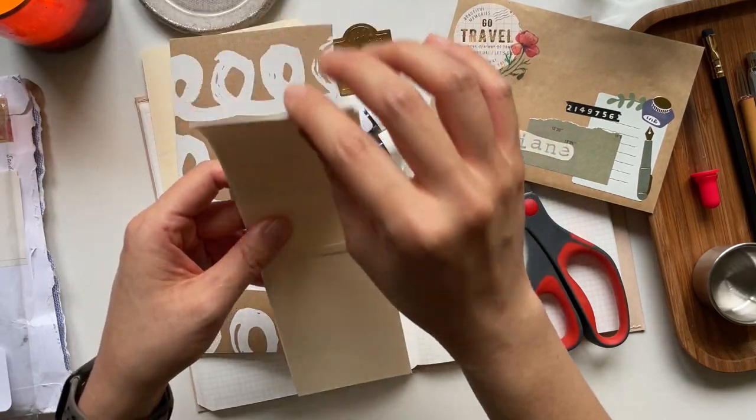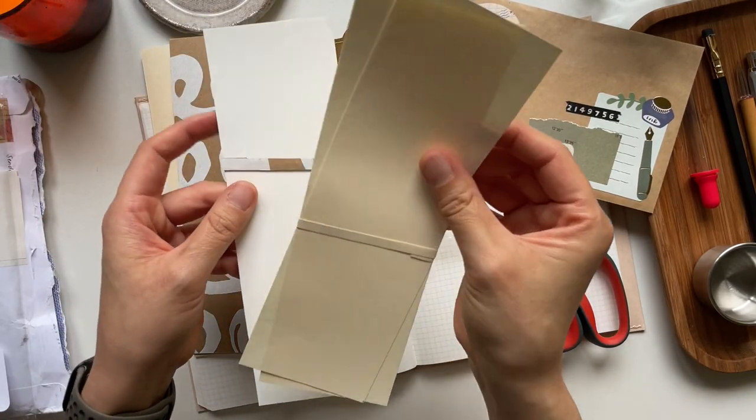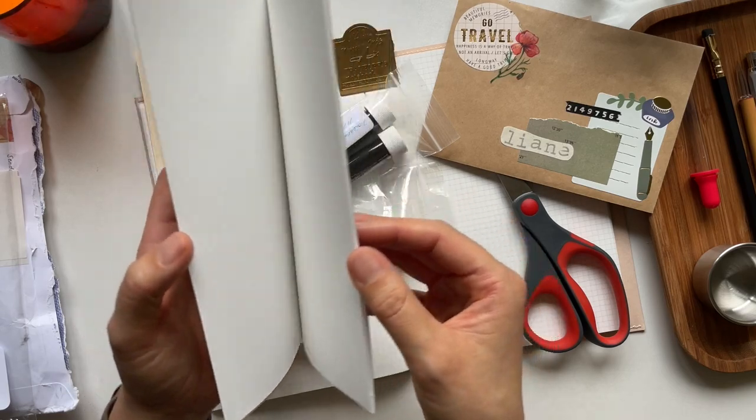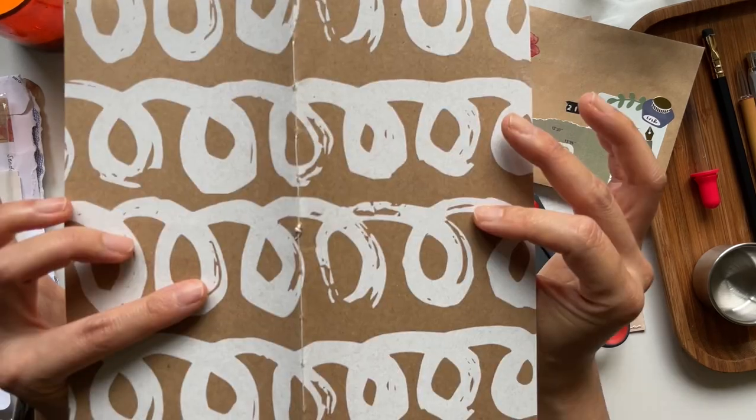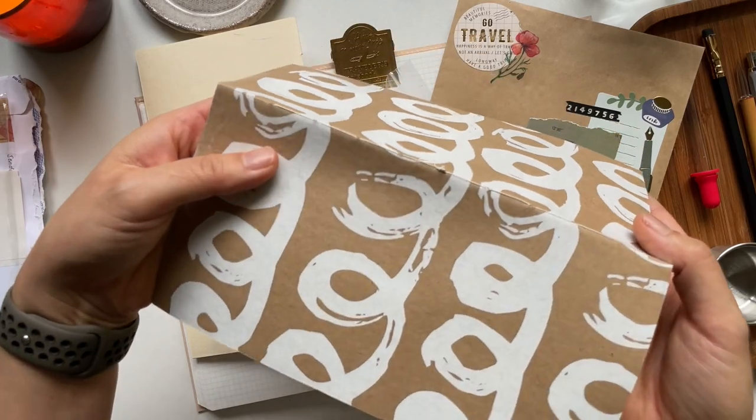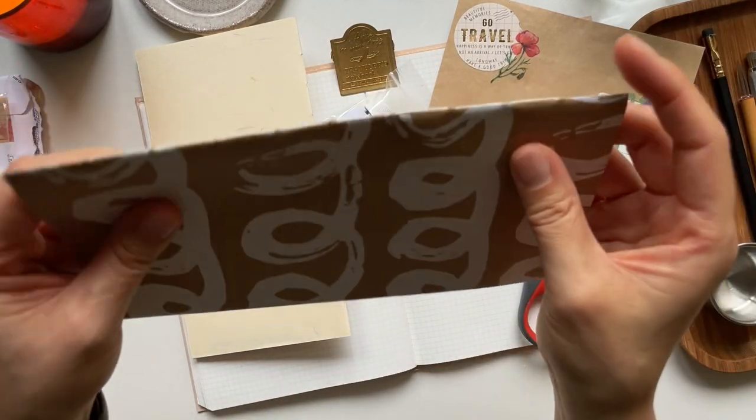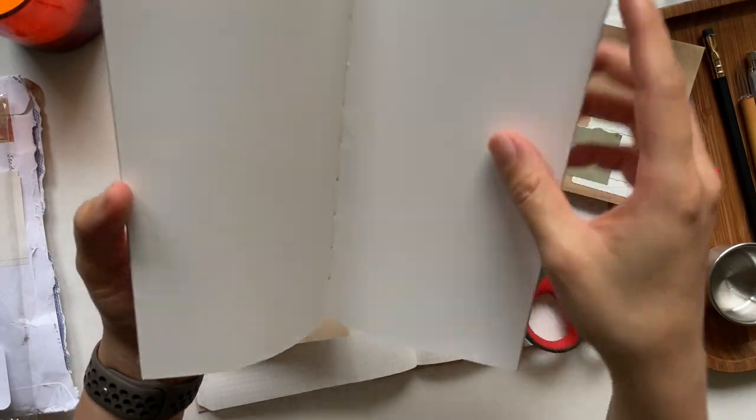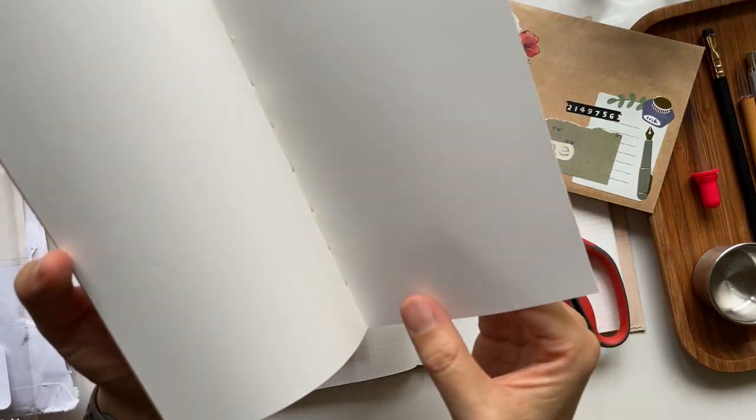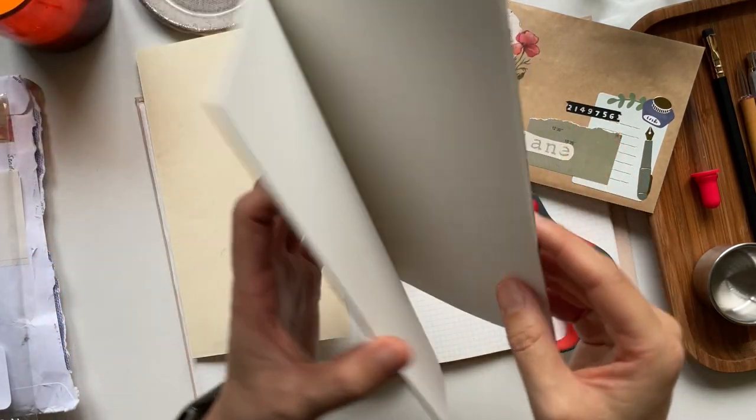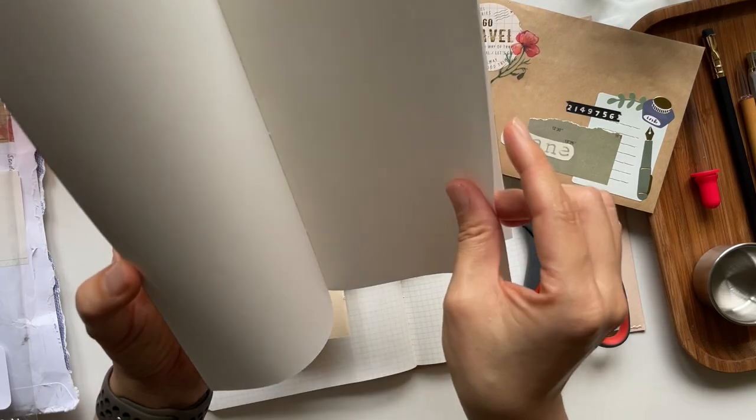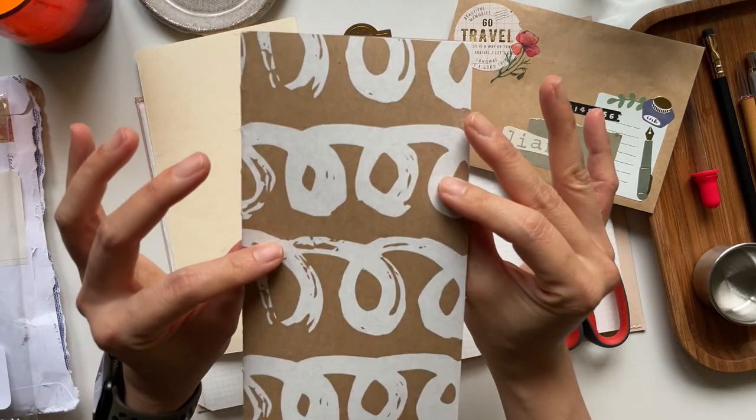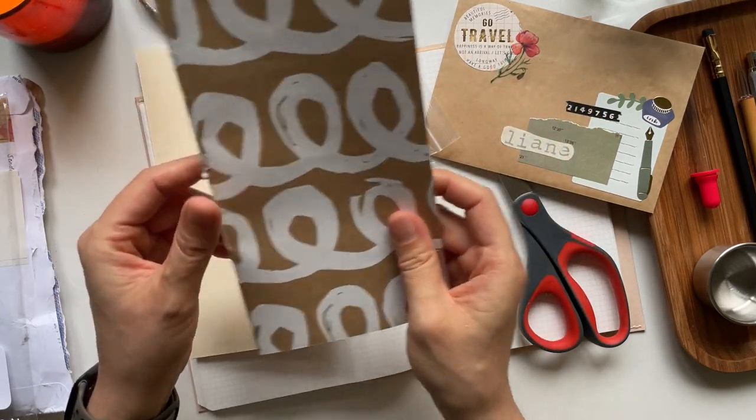So this says, I made these fountain pen friendly traveler's notebook inserts for you to swatch and play with inks. Also, I kept the offcuts for scrap paper. Enjoy. Wow, VA. Thank you so much. Oh, so this is scratch paper. Beautiful. Oh, this is stunning. She hand stitched it, which is just gorgeous. I don't know if you could see that detailing there.